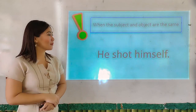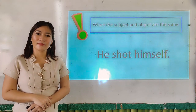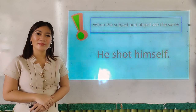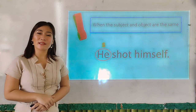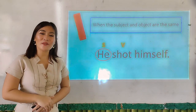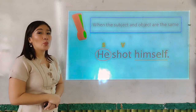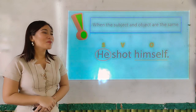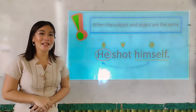Let's have another sentence. Repeat after me: He shot himself. Who is the doer of the action? Yes, the personal pronoun he. What about the verb used? Yes, the word shot. And what about the object of the sentence, or the receiver of the action? Yes, the word himself. And the word himself refers to the personal pronoun he.